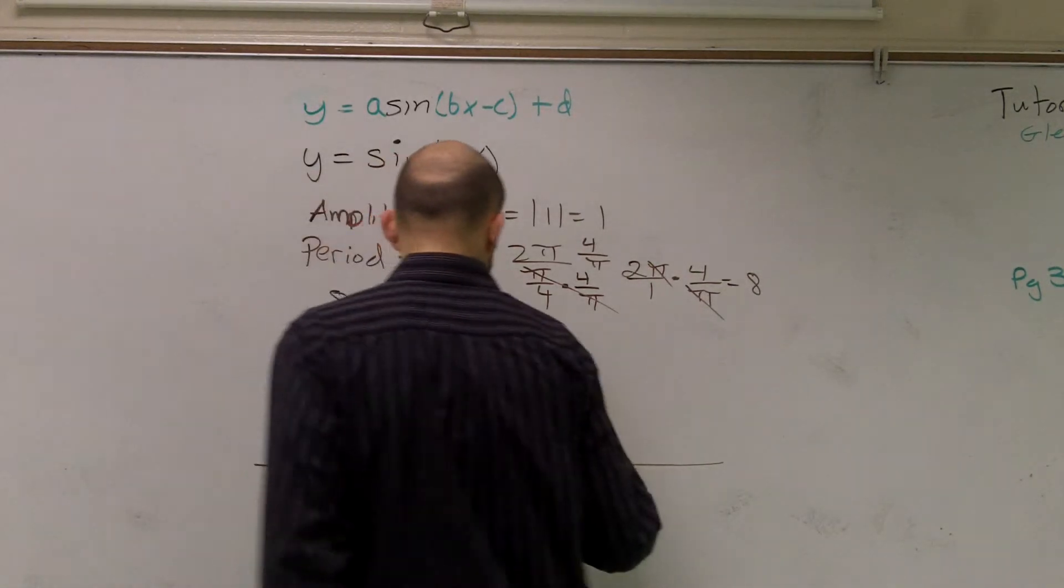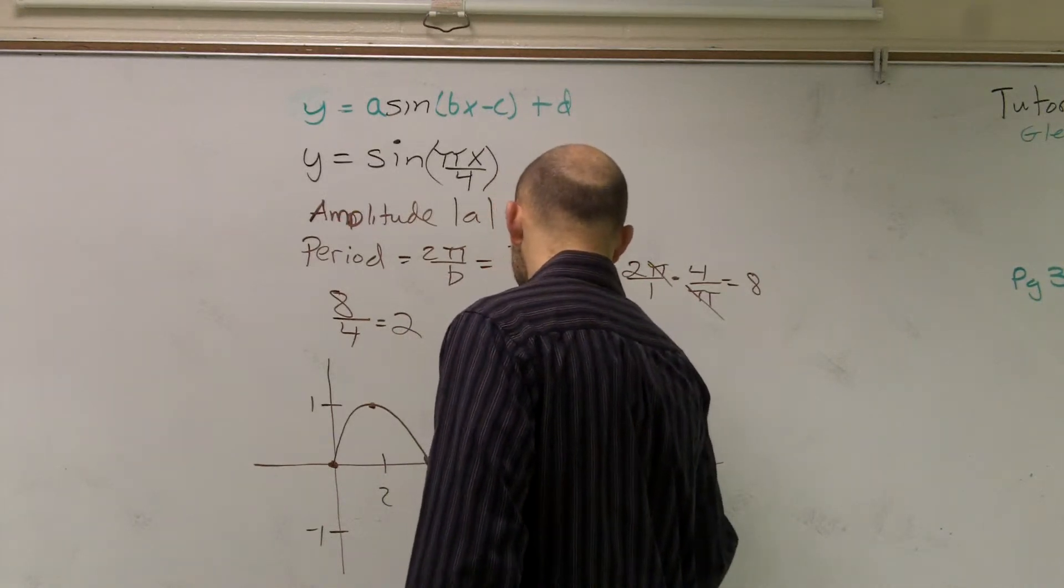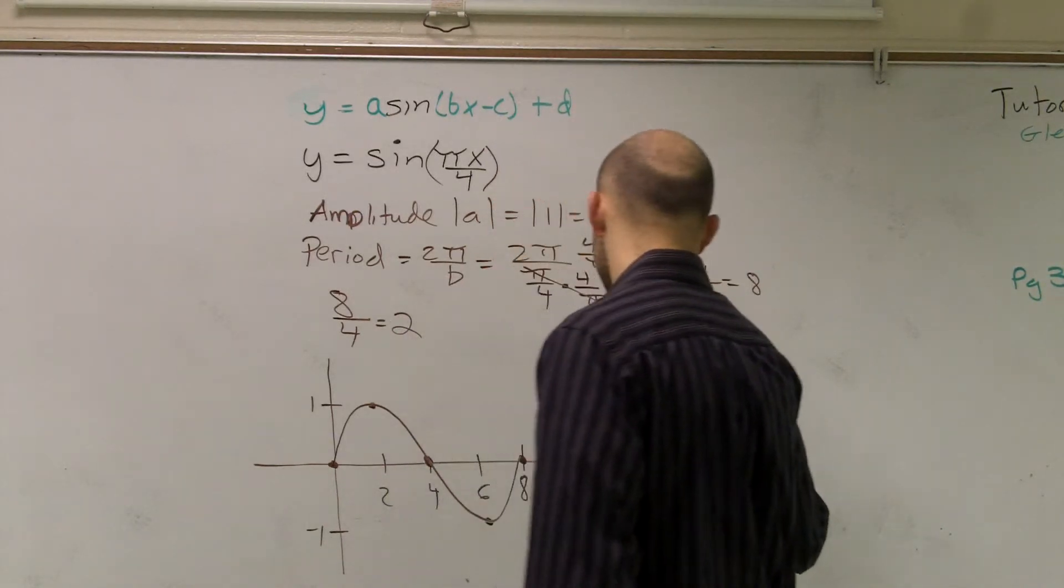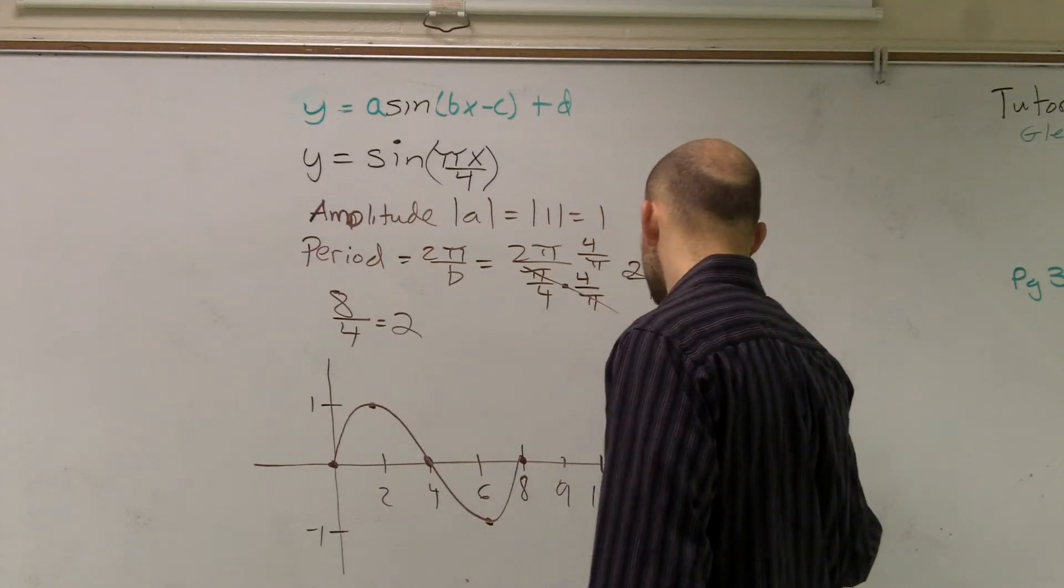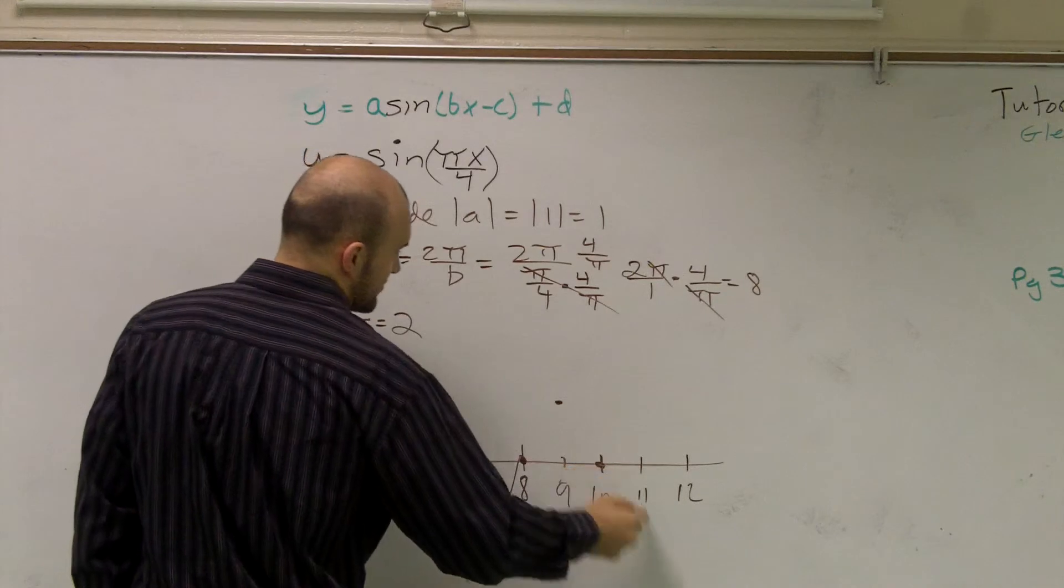If I wanted to continue, my second period would be... that would be 9, 10, 11, 12. And then you just complete the exact same process again.